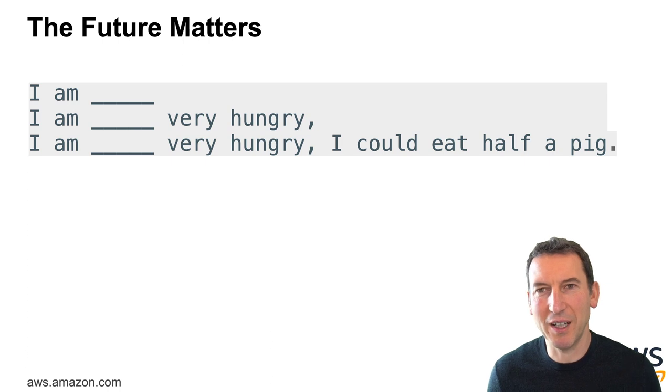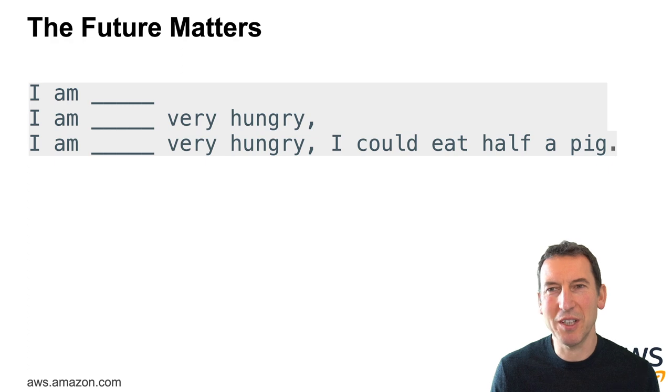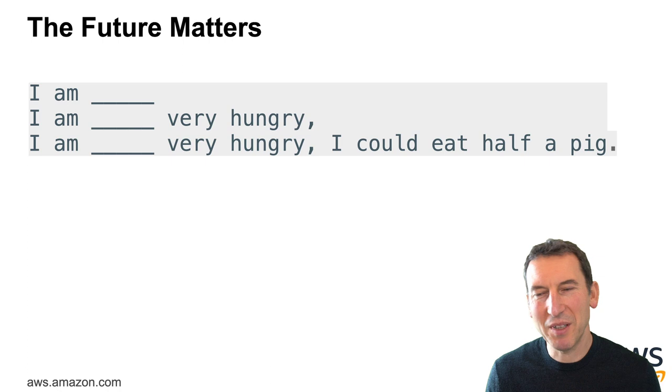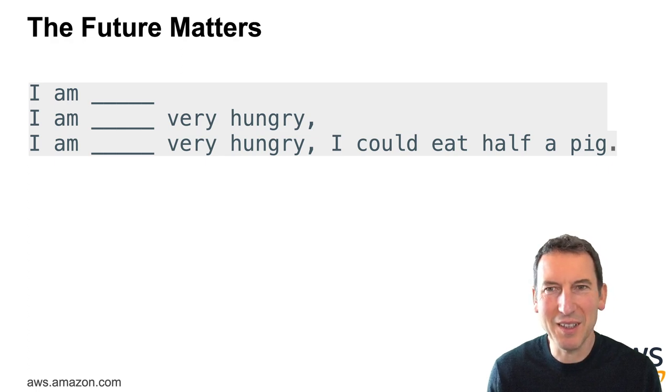On the other hand, if I have I am blank, very hungry, there are only so many different ways how I could extend this quote. For instance, it could be I am not very hungry, I'm really very hungry, I'm again very hungry. Actually, I'm very hungry again is the better version of saying that in English. But you can plug in various pieces in there. But if the next sentence goes, I could eat half a pig, well, it means this person is actually really hungry.